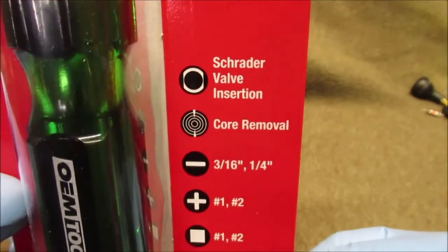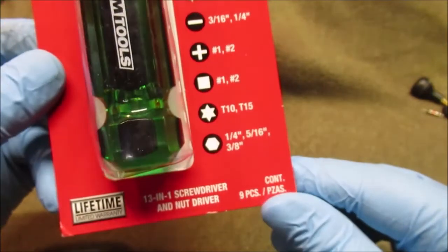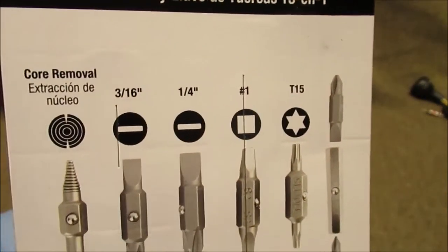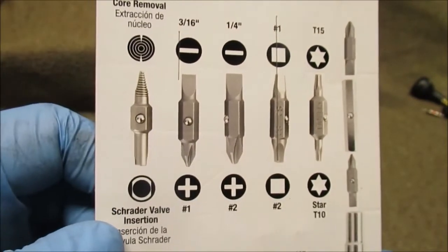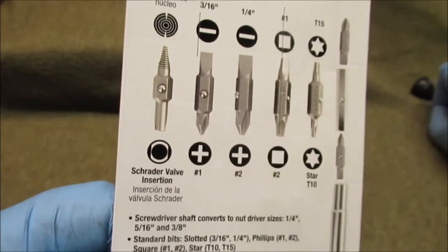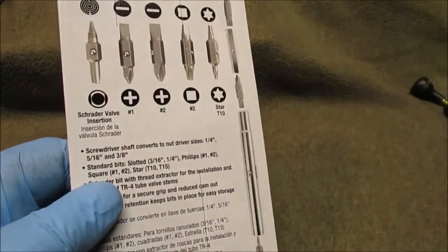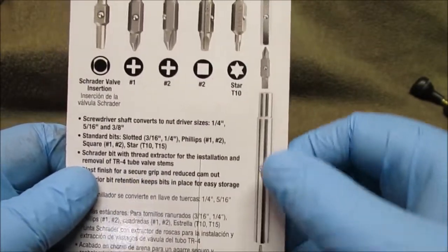We'll do real quick, show you what it has for bits, then we'll pause and take it out of the package. We'll have pictures of those, and we'll show you how that core removal tool works. That's your Schrader valve, that's the little thing in your valve core.